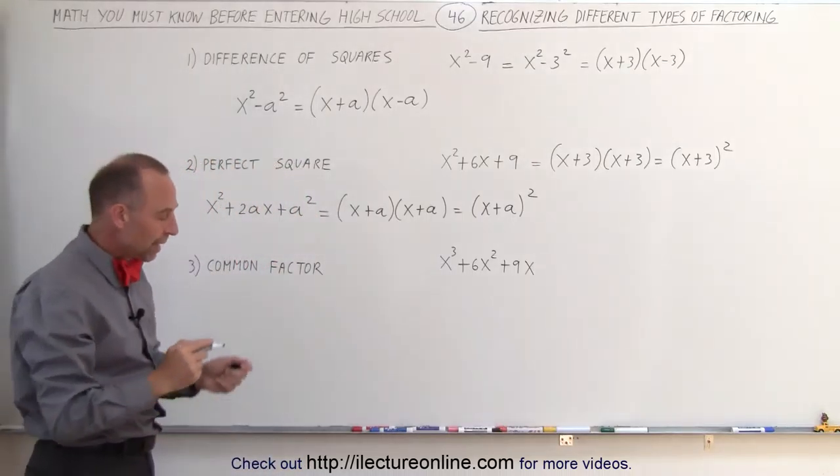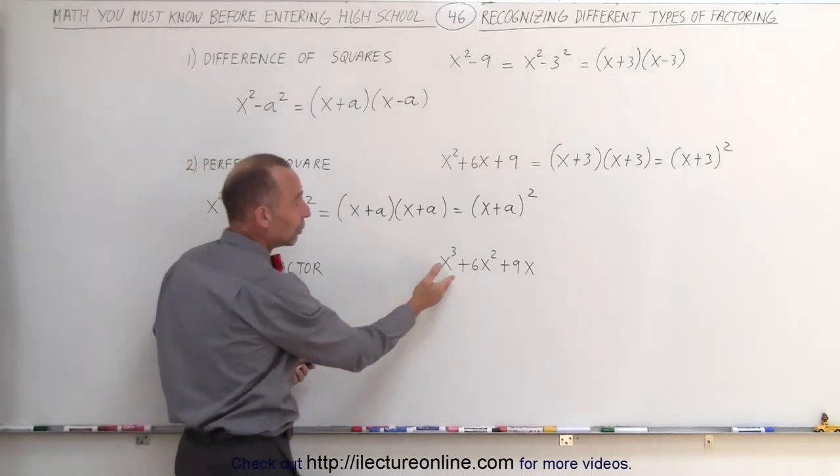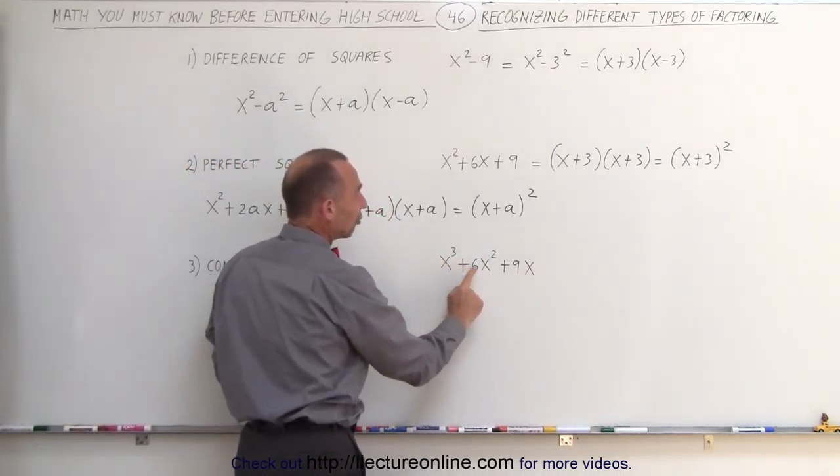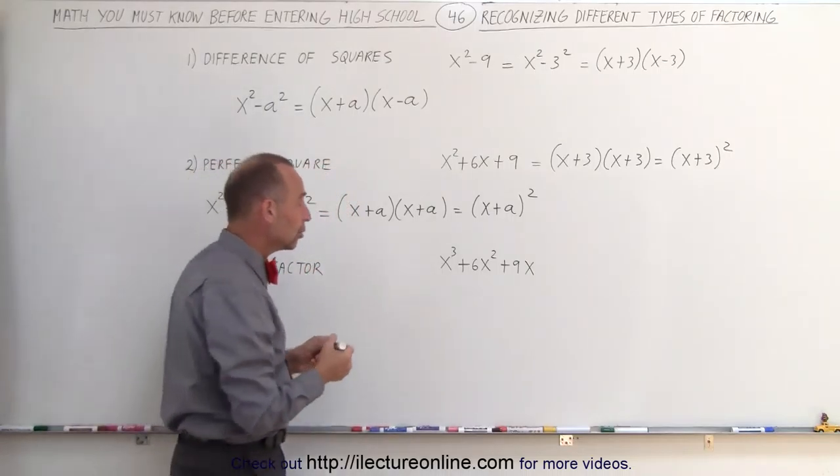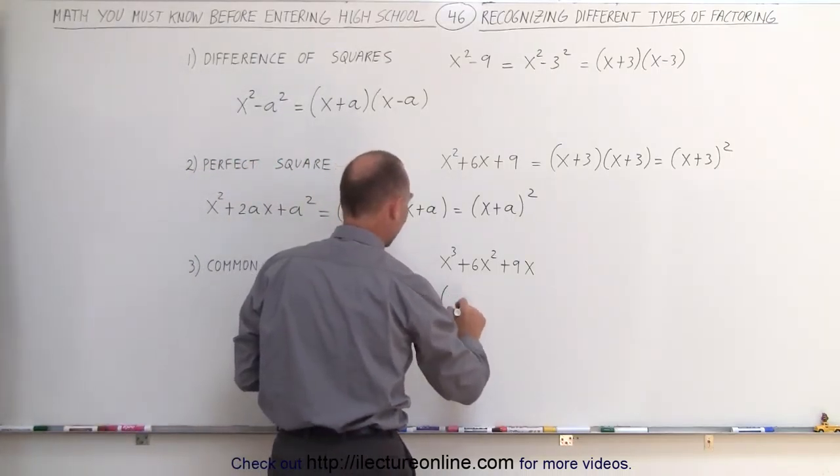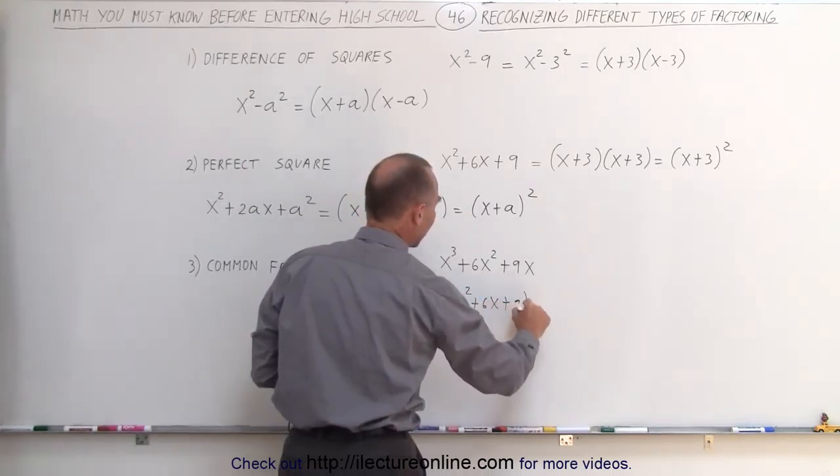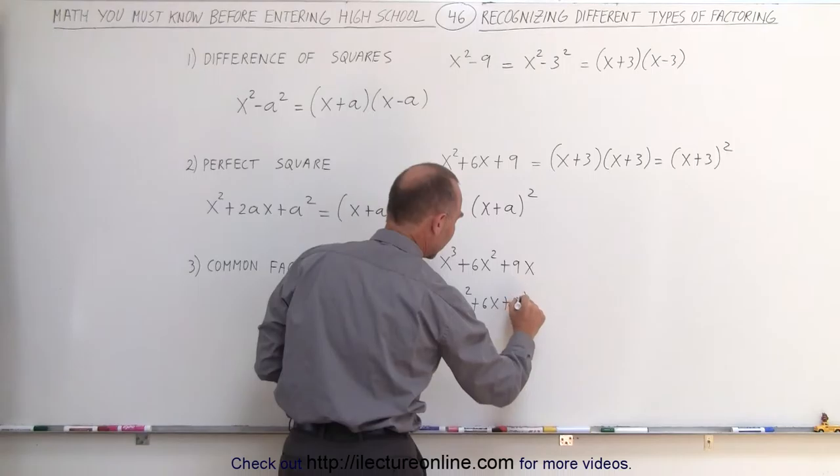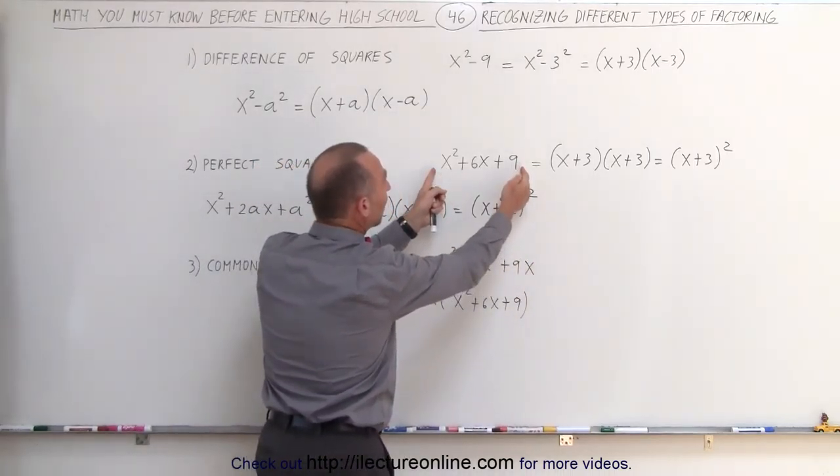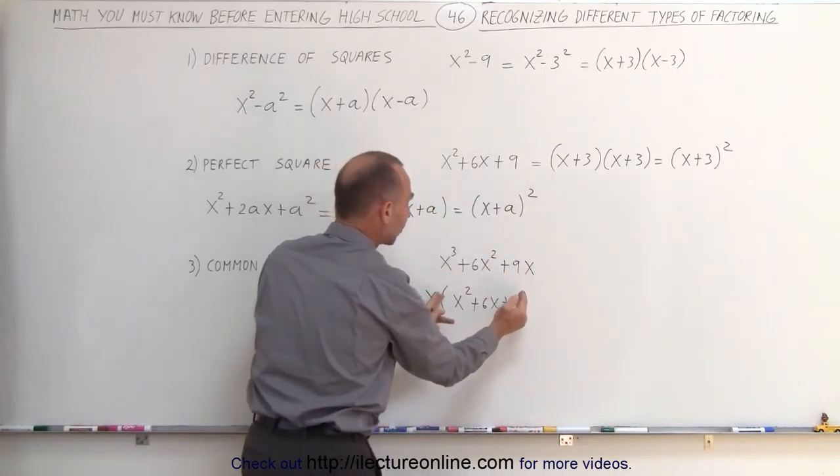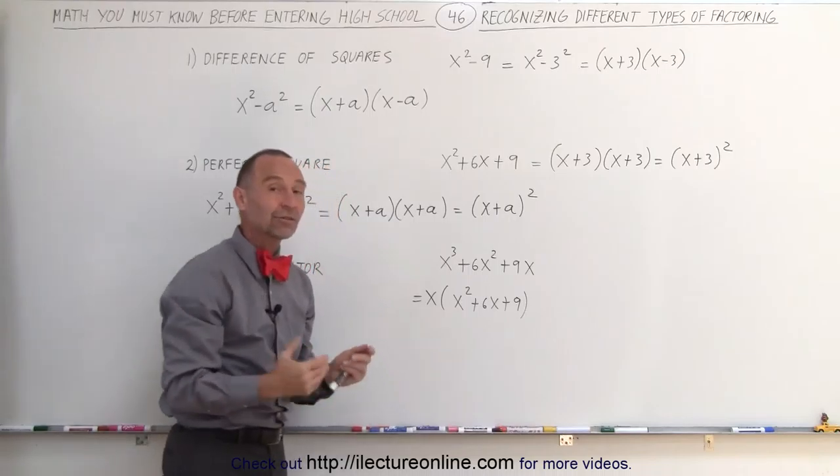And finally, you may end up with something that has a common factor already built in. Here you have a trinomial, but notice that each term has an x in it that you can factor out. When you do that, you can write it as x times x squared plus 6x plus 9. And now you see that what's in the parentheses here is exactly the same as what we have over there, which means you can factor this exactly the way you did over there, but you still have the x there that you factored out.